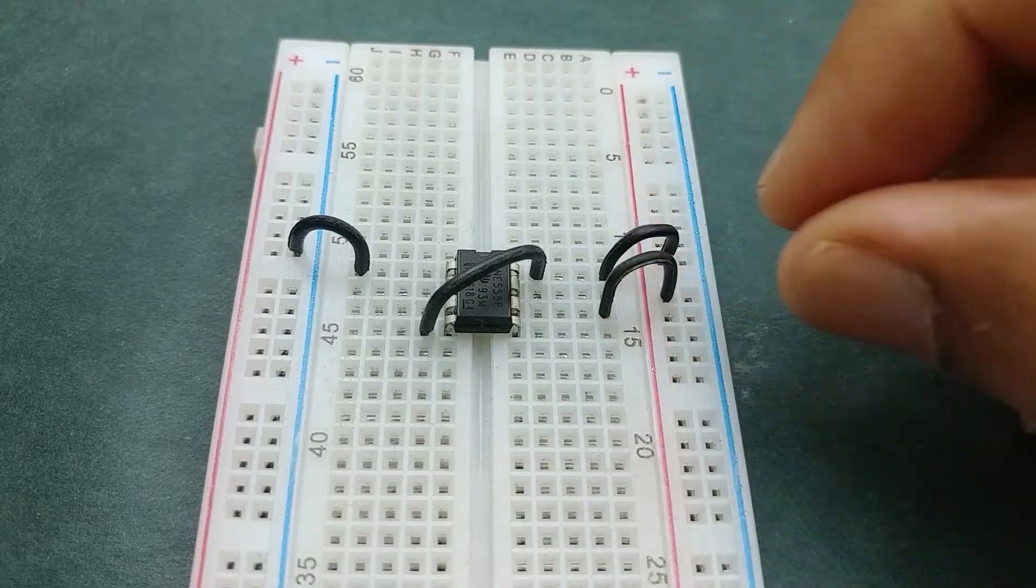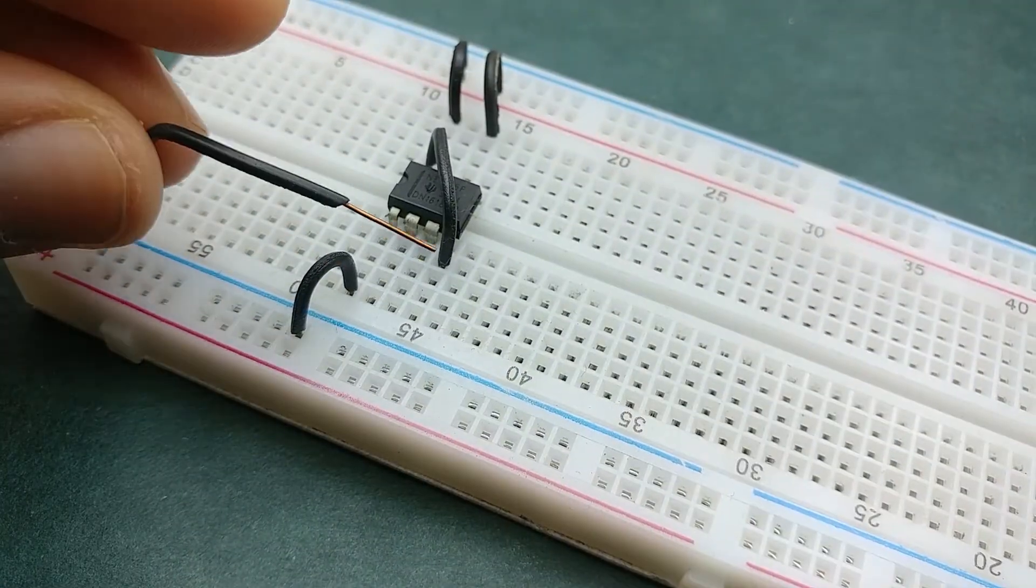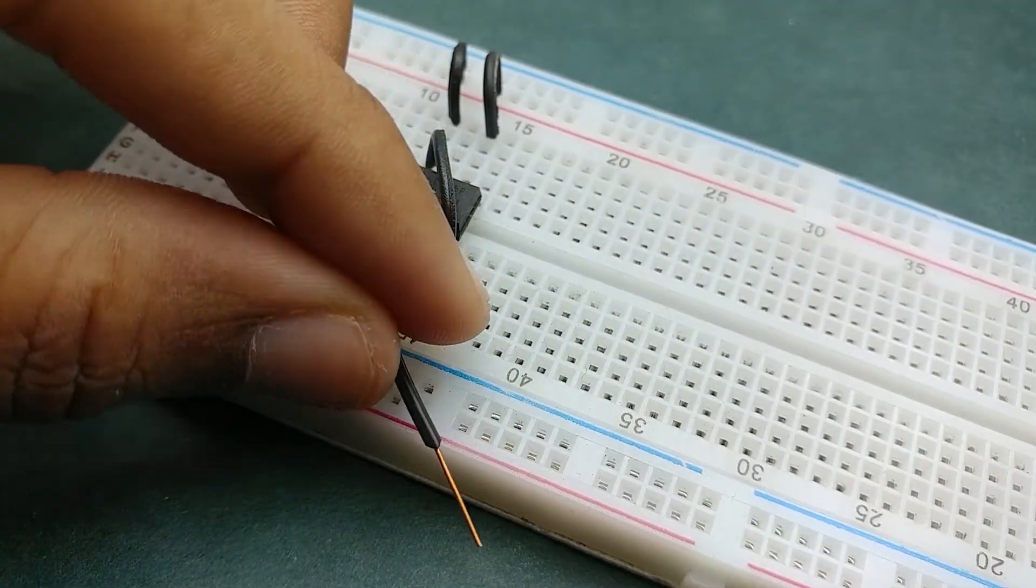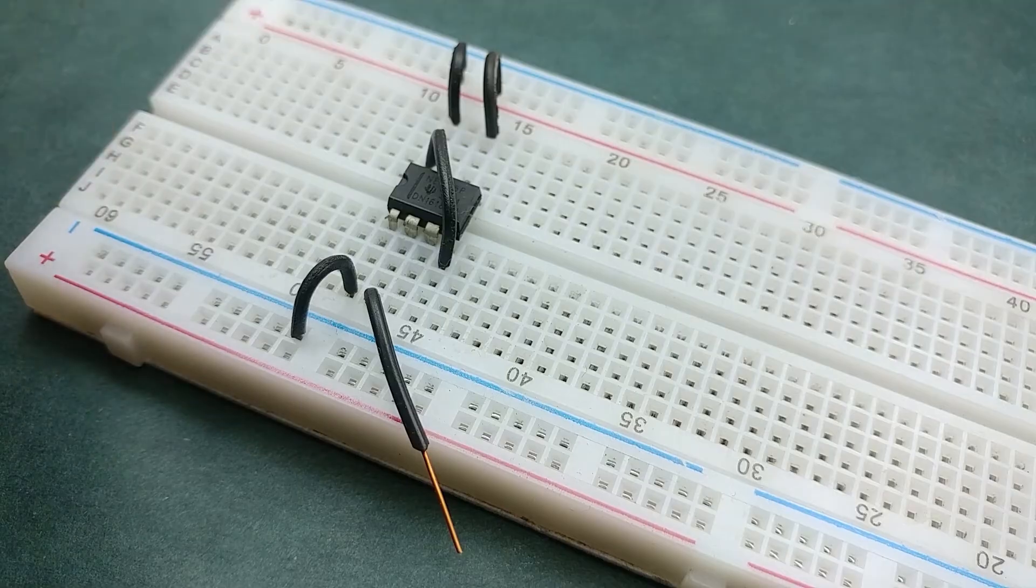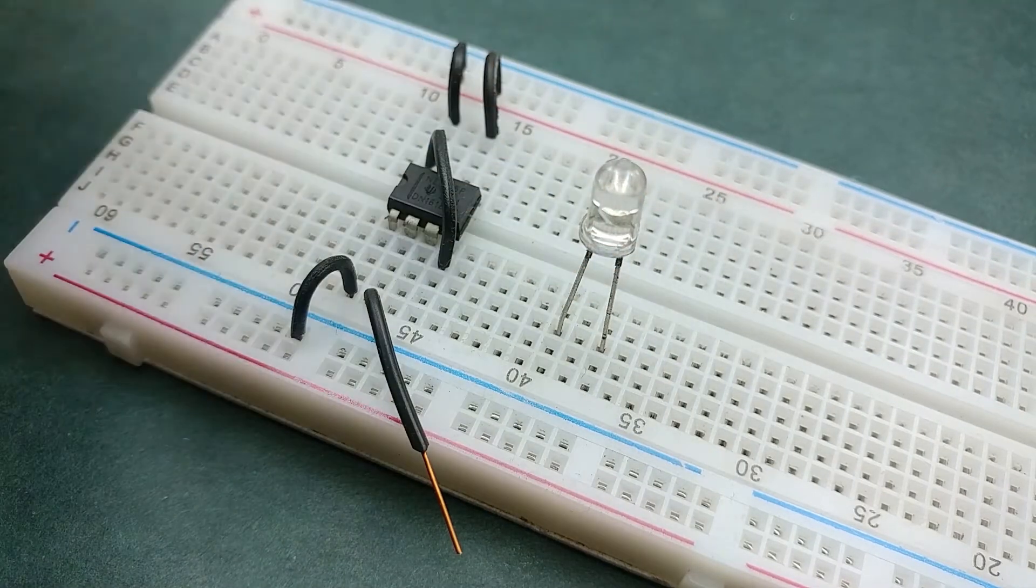Now connect pin 6 to positive rail and connect a touch contact at pin 2 of the 555 timer IC. You can use any connecting material instead of this copper wire. Next place an LED on the breadboard.